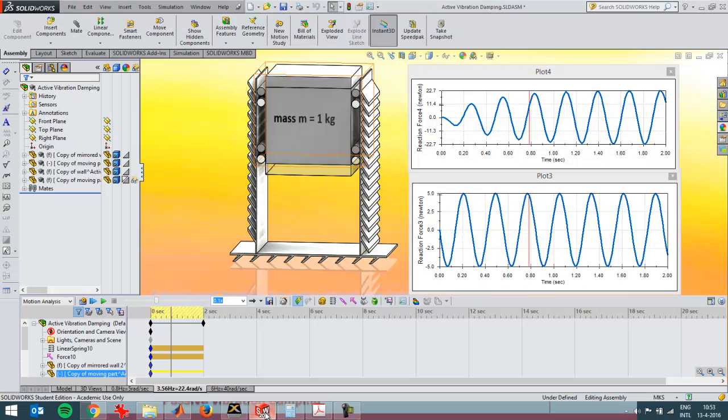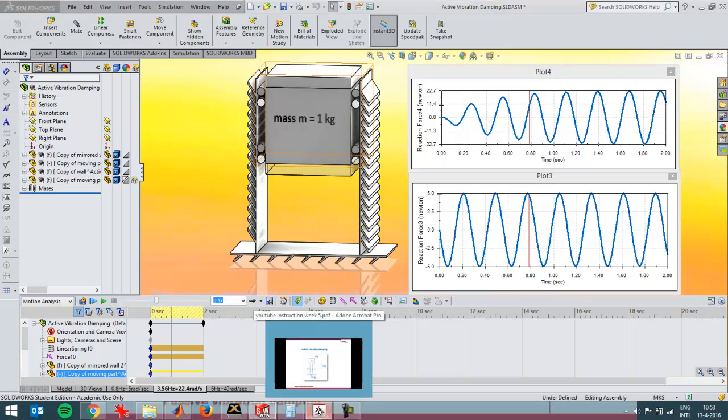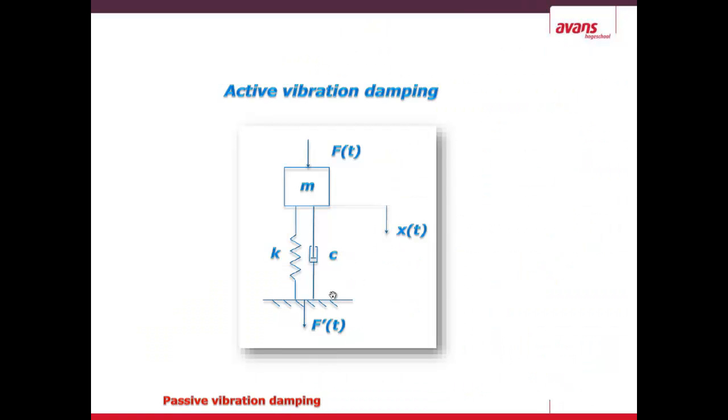I've got the SOLIDWORKS files open over here. I'm going to show some analysis of it later. First I'm going to go to a short presentation where I show the equations that I'm going to use. There's a force, a fluctuating force on a machine, and via a spring and a damper it's causing a fluctuating force on the floor.